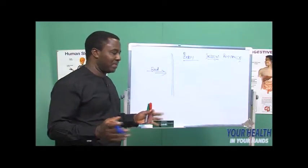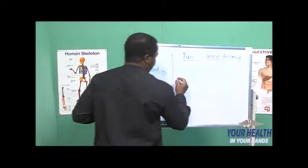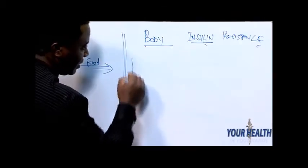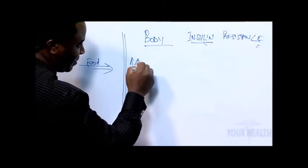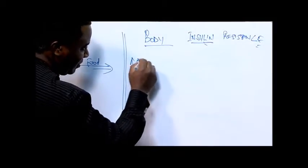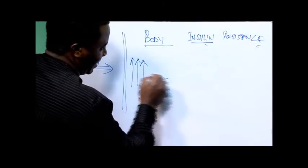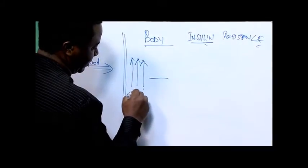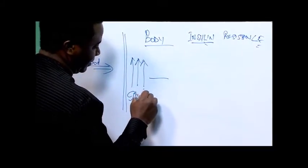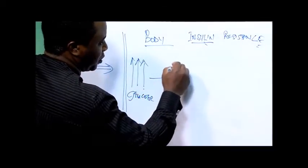Explaining what diabetes is about. Food gets into the body, glucose rises, and insulin is produced.